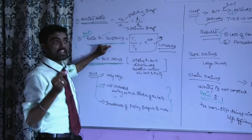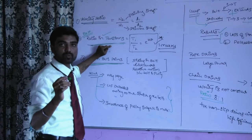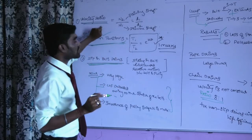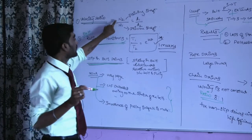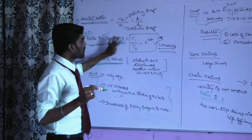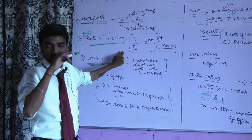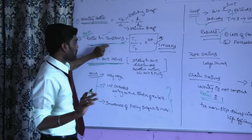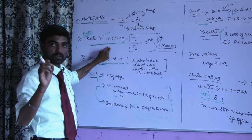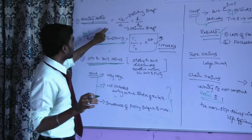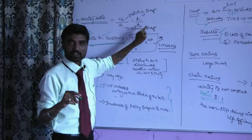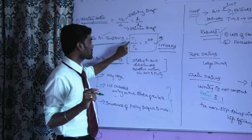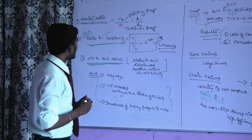To summarize: the capacity of belt drives, the angle of contact, and ratios in tension are important concepts. The velocity ratio of belt drives is N2 by N1 equals D1 by D2. Next is ratios in tension, followed by slip in belt drives.